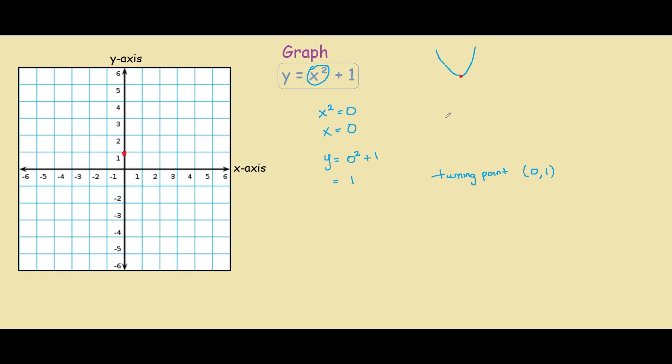The reason I found the turning point is because if we find the values for one side of the parabola, say this side over here, we can just reflect this onto the other side, saving us some time. Let's create a table. We have our x values here and our y values here.